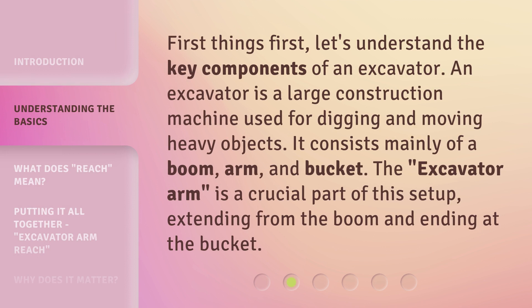First things first, let's understand the key components of an excavator. An excavator is a large construction machine used for digging and moving heavy objects. It consists mainly of a boom, arm, and bucket. The excavator arm is a crucial part of this setup, extending from the boom and ending at the bucket.